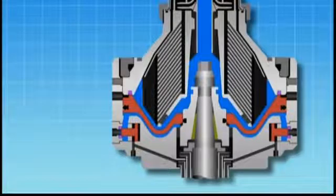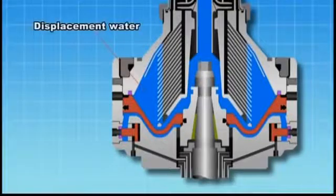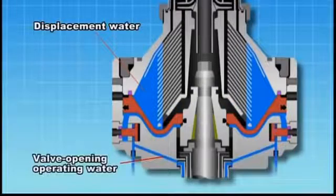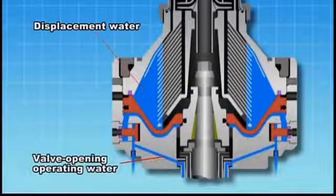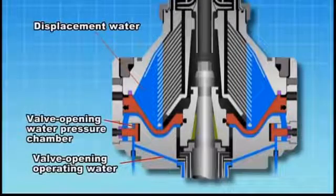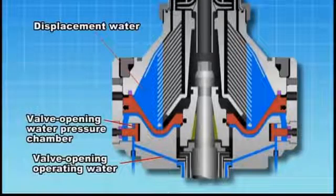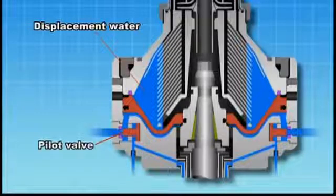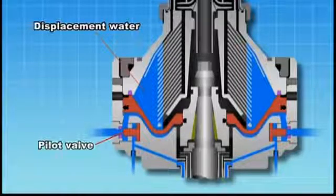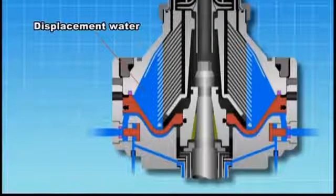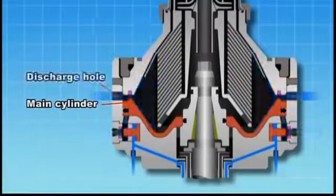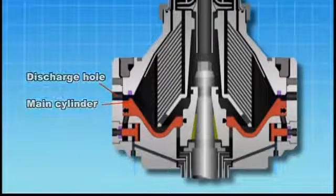Displacement water is supplied from the dirty oil inlet. At the same time, the main cylinder is pushed down to open the discharge hole and discharge the displacement water.